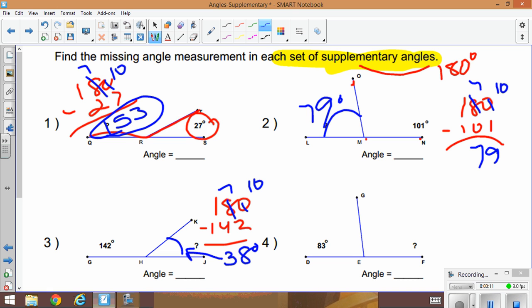In the last example, I know the two angles need to add to 180. Subtract 83. So 10 minus 3 is 7, 17 minus 8 is 9. So this is 97 degrees.